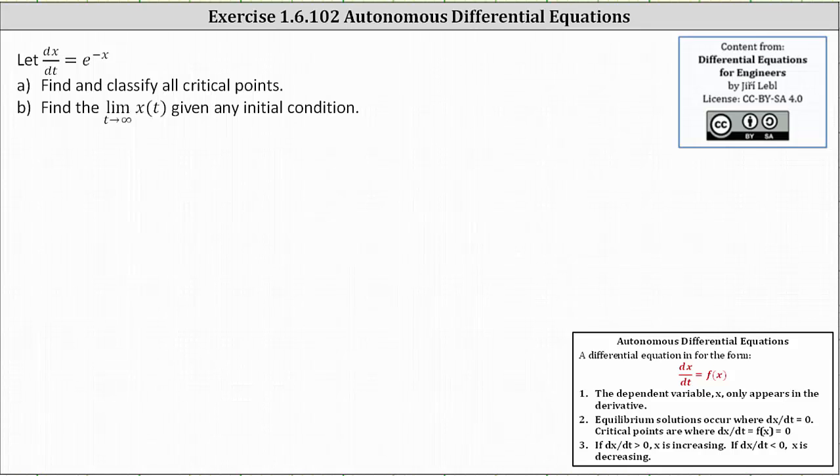To begin, we have an autonomous differential equation because the equation is in the form of dx/dt equals f(x), meaning dx/dt is equal to a function only of the dependent variable x. The critical points are the points on the x-axis where dx/dt or f(x) is equal to zero.